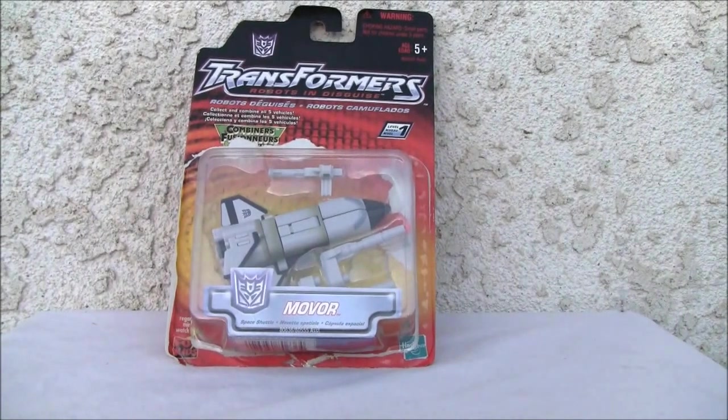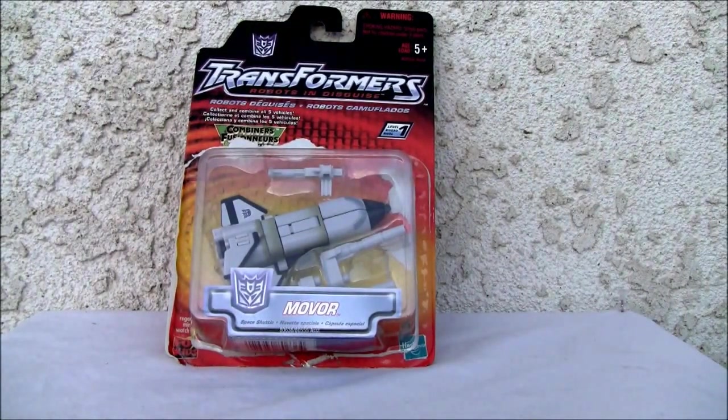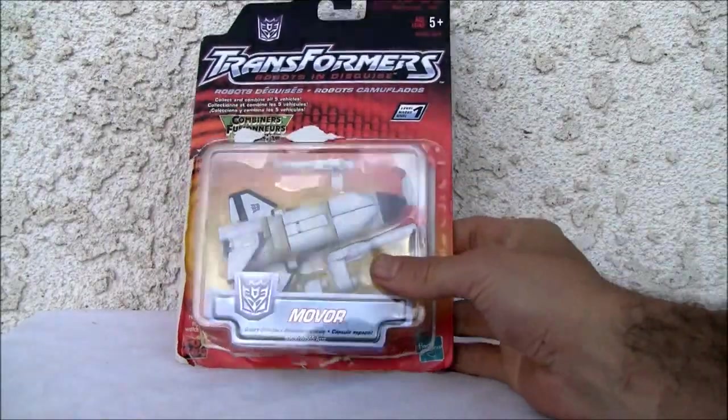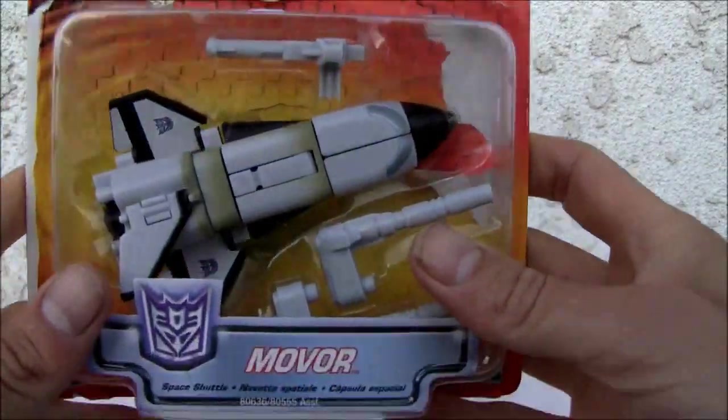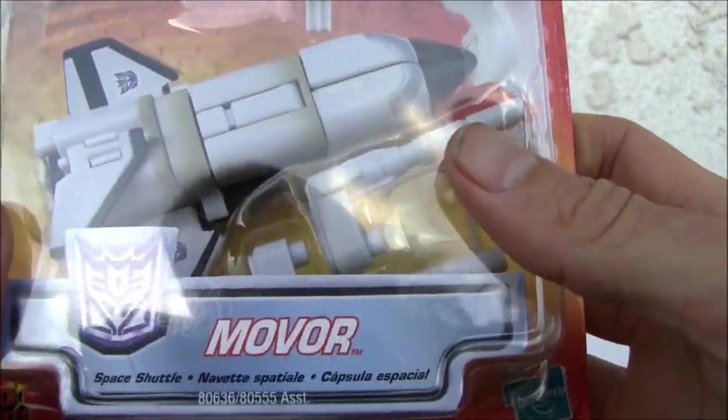Konnichiwa YouTubers, Redstock straight from Point Mugu, California. Today we're going to do a video review of Transformers Robots in Disguise Movor. This is a recolor of G1 Blastoff. This is from the Combaticons.